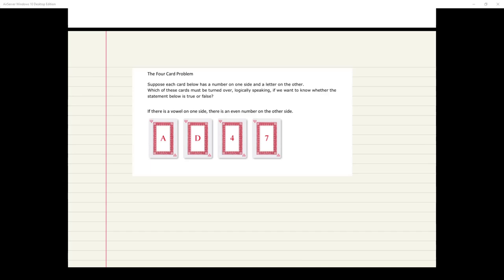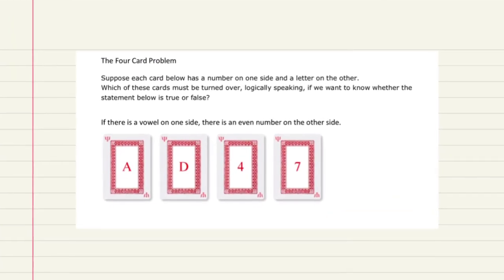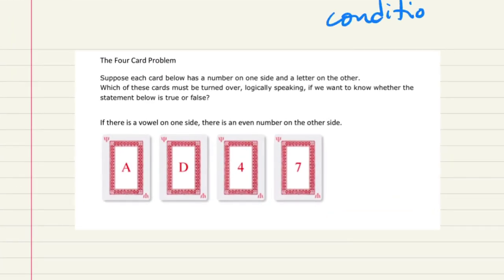This is the four-card problem, an interesting question in logic that deals with understanding the concept of the conditional. Each card has a number on one side and a letter on the other — that's a given we take to be true. Which of these cards must be turned over to reveal the other side? Strictly by logic, which cards do you have to flip to confirm whether or not a given statement is actually true?